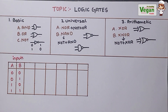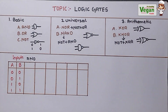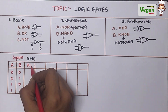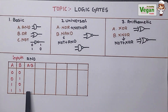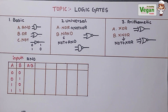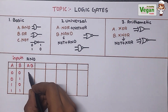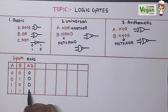Let's discuss the AND gate. The formula for AND gate is A into B. If both inputs are high, then only the output will be high; in all other cases, the output will be 0. So: 0×0=0, 0×1=0, 1×0=0, and 1×1=1.